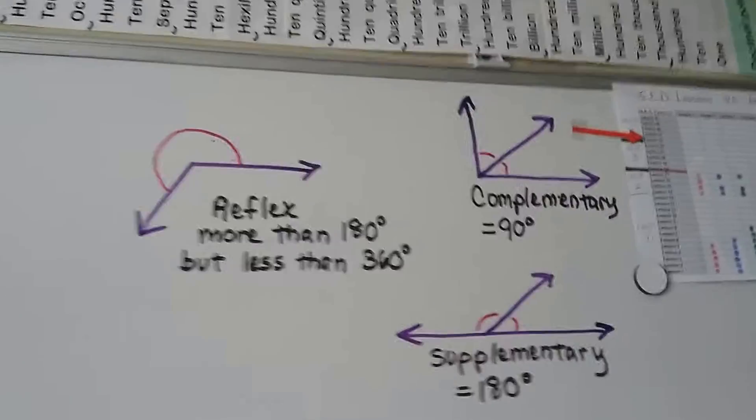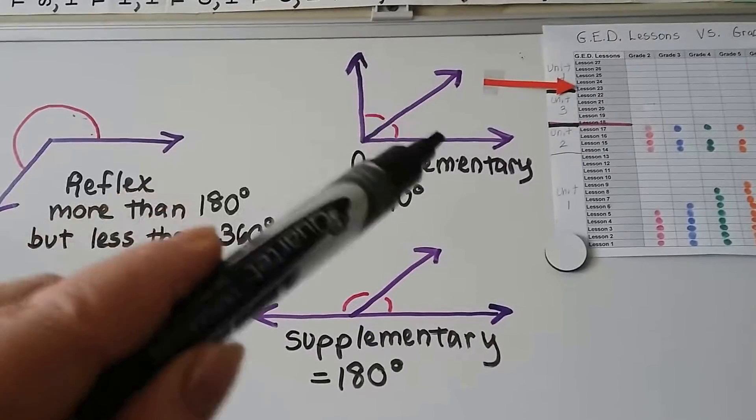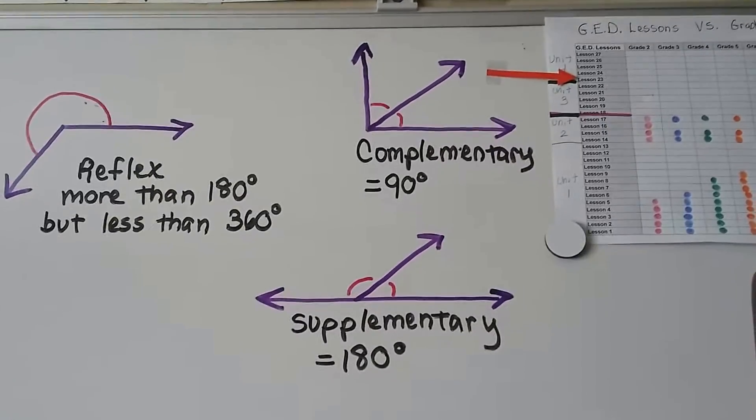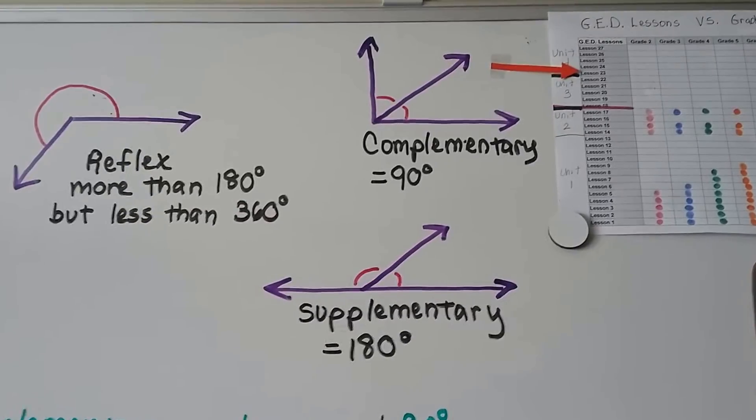There's also complementary and supplementary angles. Complementary angles, when you add them together, they're going to total 90 degrees. And supplementary angles, when you add them together, they'll total 180 degrees.